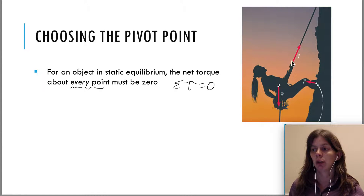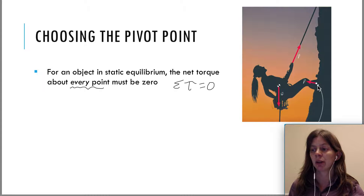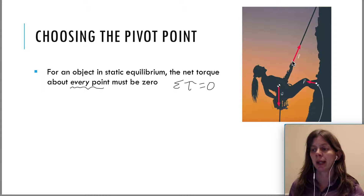I have a picture of a mountain climber here, and it shows her weight acting at the center of gravity downward, the tension here where she's being pulled up by the cable, and then there's some kind of force here by the mountain wall. So what we're saying is that it doesn't matter where we pick the pivot point — the net torque must be zero because she's at rest.